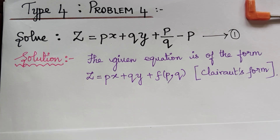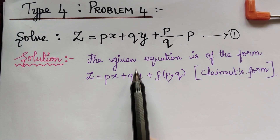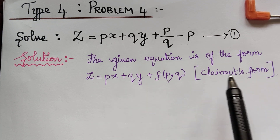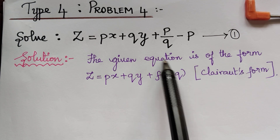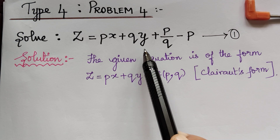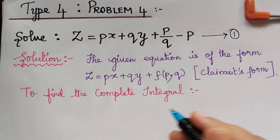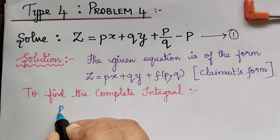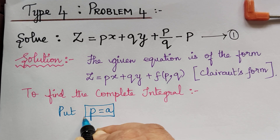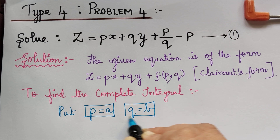Therefore, we can write that the given equation is of the form z equal to px plus qy plus a function of p comma q. To solve this equation, we first have to find the complete integral. In order to find the complete integral, we put p equal to a and q equal to b in equation 1.